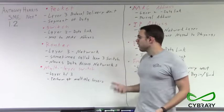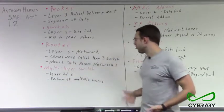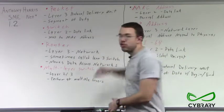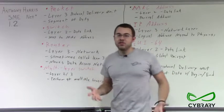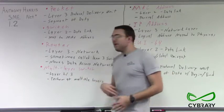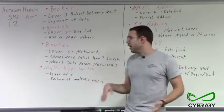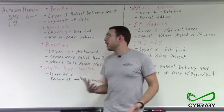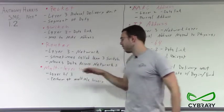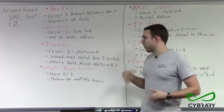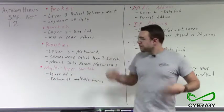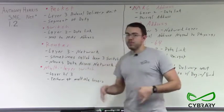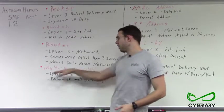We also have routers, sometimes referred to as a layer 3 switch, because they allow us to connect to multiple different networks. They allow us to route IP addresses and send data across multiple different networks. Because we're working with IP addresses and routing data, our routers are going to be layer 3. We also have multi-layer switches, which are devices that can perform at layer 2 or layer 3. They may just perform switching functions, but if necessary can also perform routing functions, so they are considered layer 3 switches.